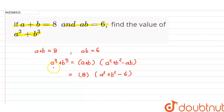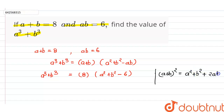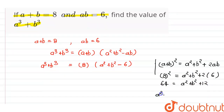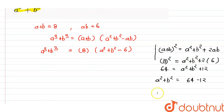For finding a cubed plus b cubed, we first need to calculate a squared plus b squared. We know the formula: (a plus b) squared equals a squared plus b squared plus 2ab. Here a plus b is 8, so 8 squared equals a squared plus b squared plus 2 times 6. This gives 64 equals a squared plus b squared plus 12. So a squared plus b squared equals 64 minus 12, which is 52.